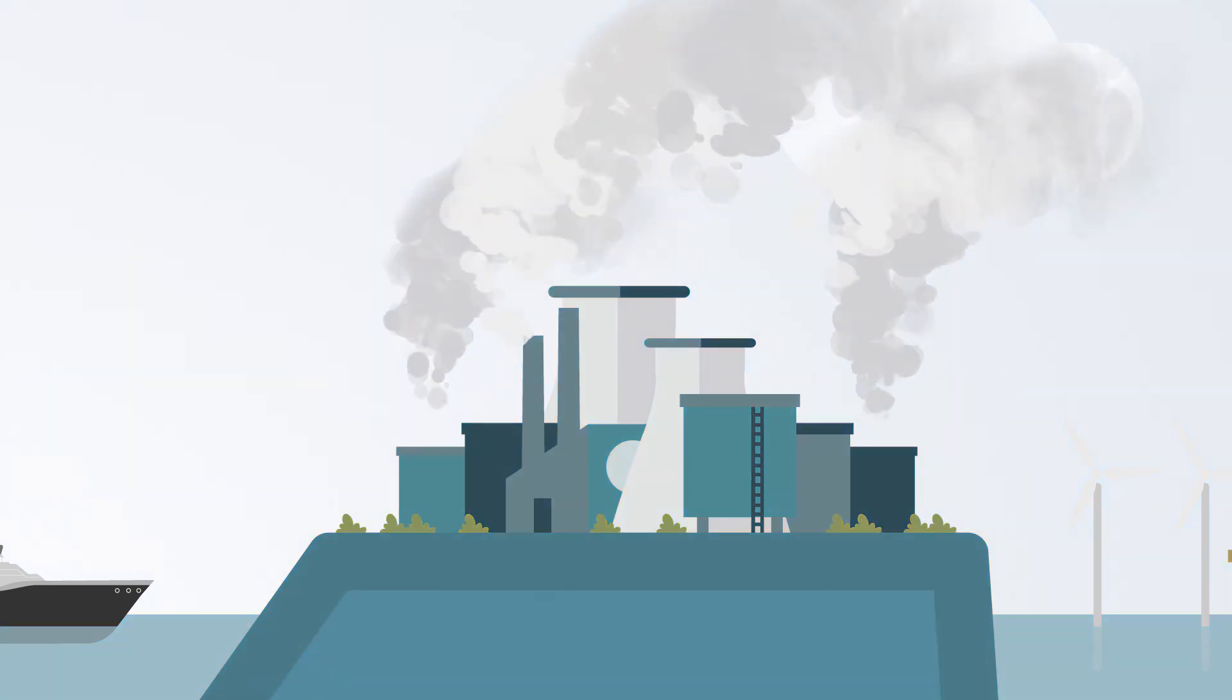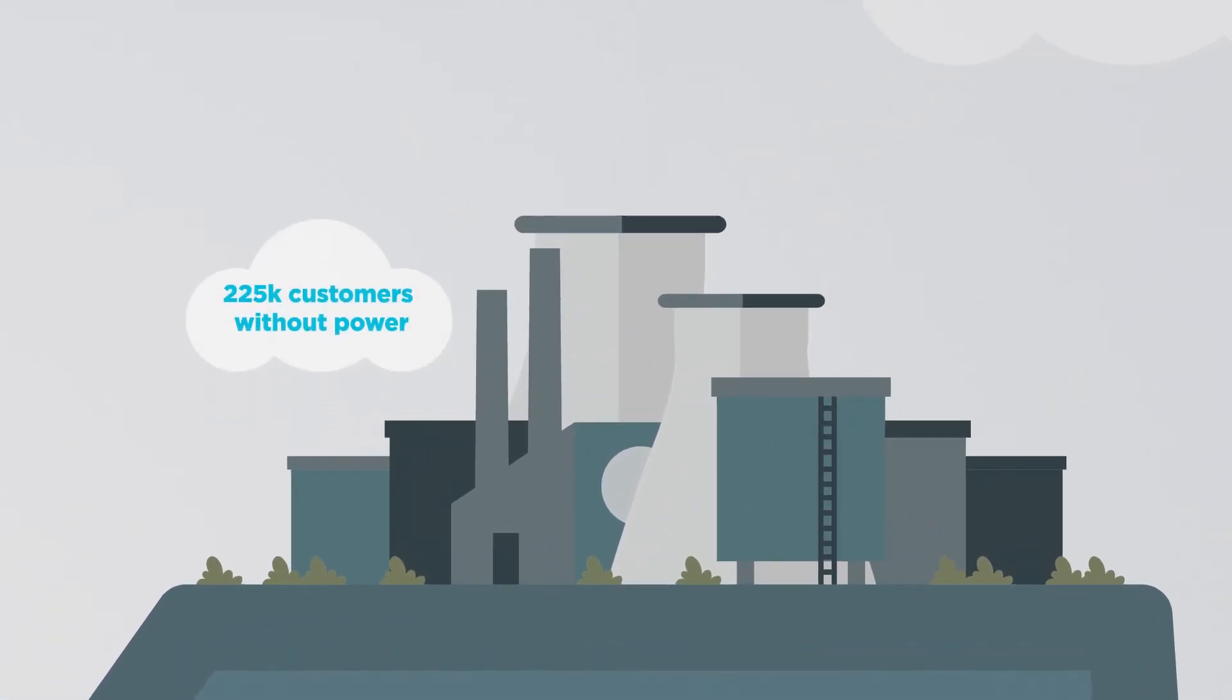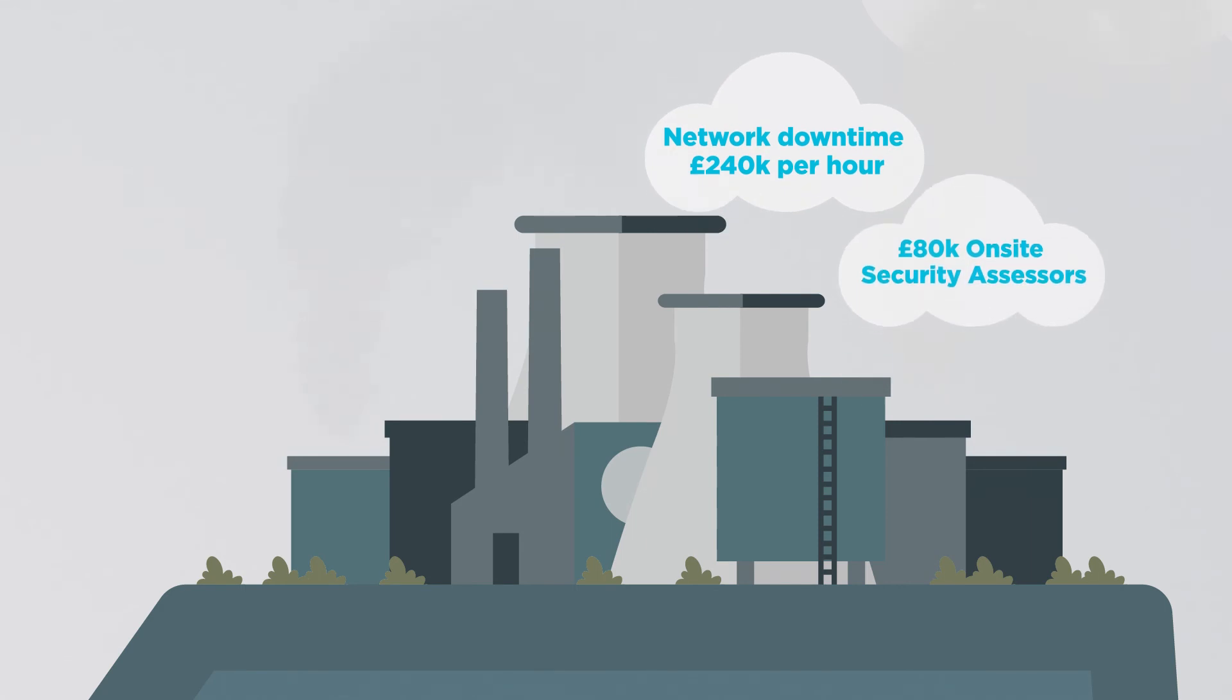In 2015, a cyber attack against a Ukrainian power plant resulted in outages causing a loss of power for 225,000 customers, costing £27 million in revenue losses and £1.2 million in reputational damage. The ensuing investigation took four years.